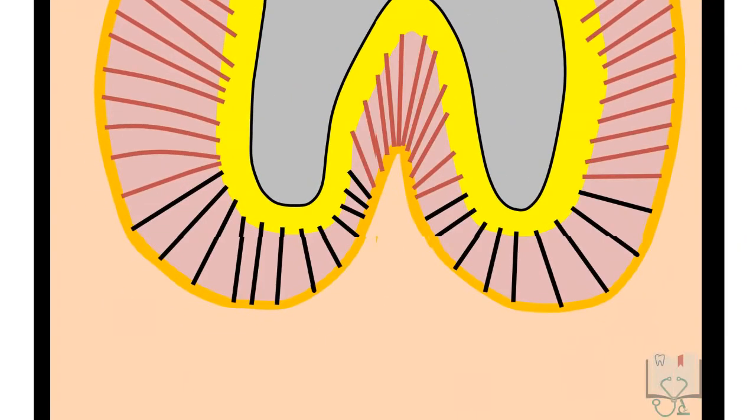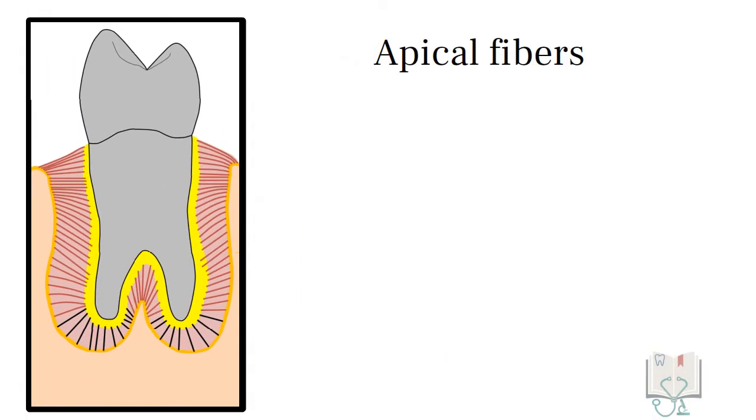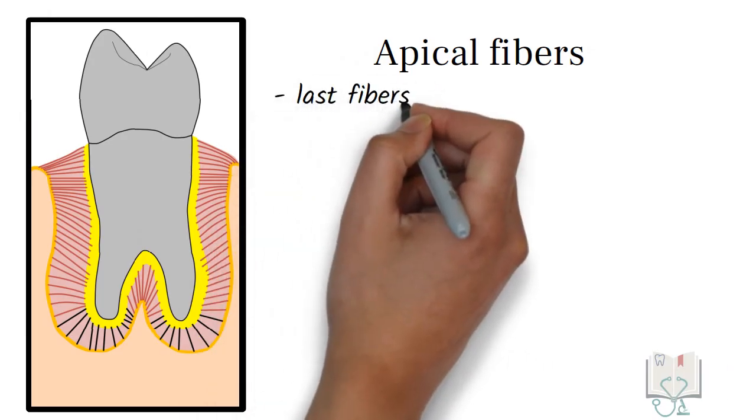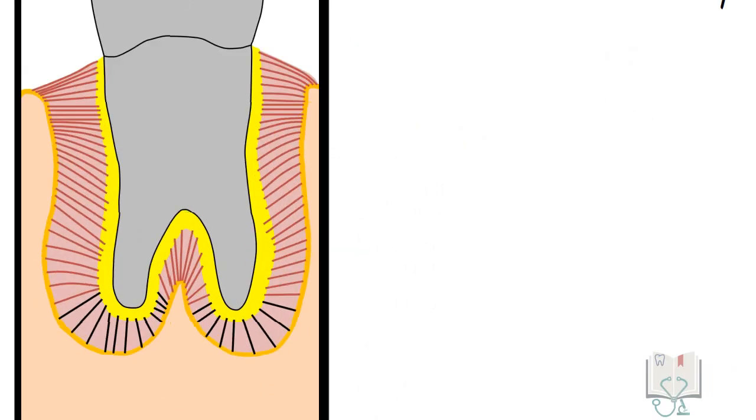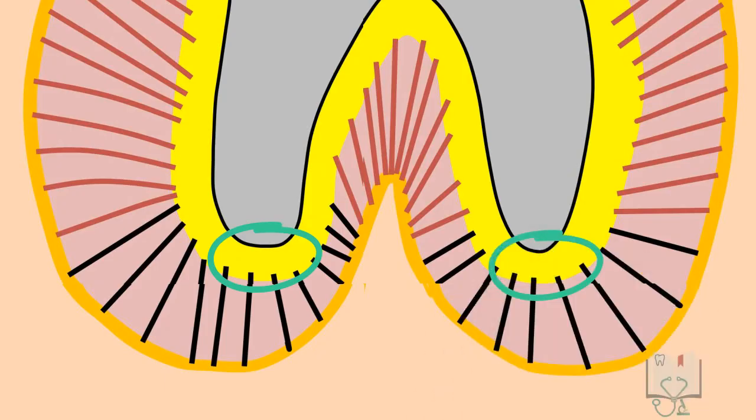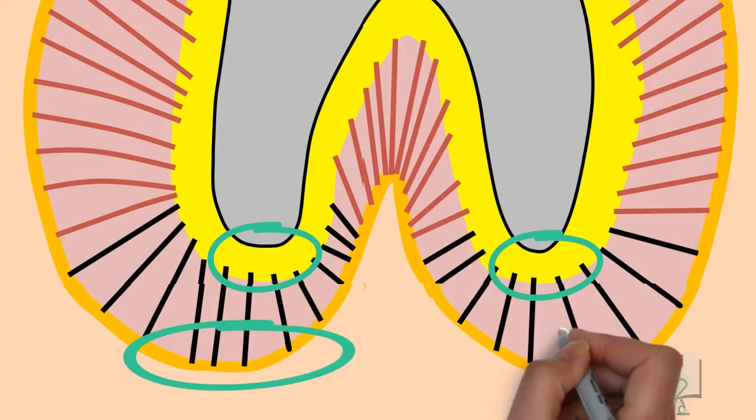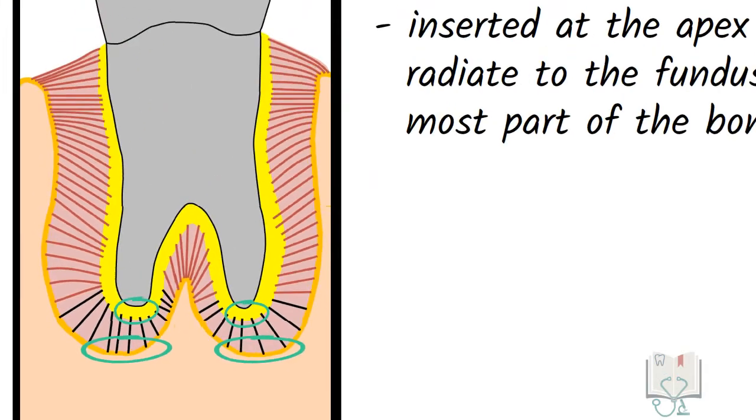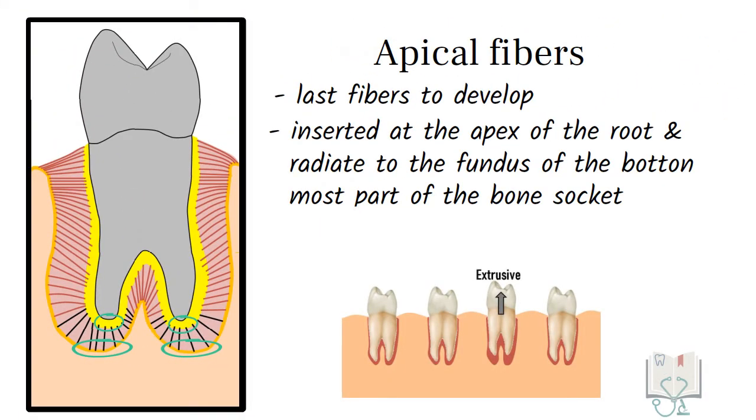Finally, the last group of fibers, apical fibers. These fibers are the last group to form. They are inserted at the apex of the root and radiate to the fundus or the bottom most part of the socket. They protect the tooth from extrusive forces.